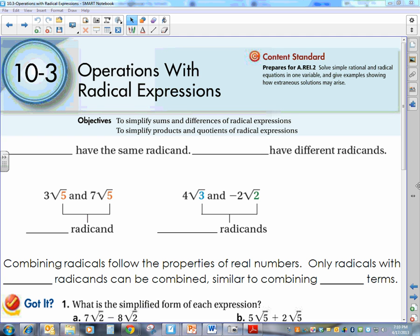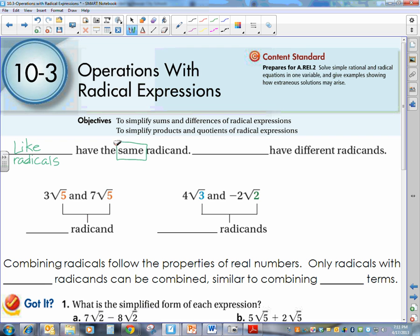Okay, today we're talking about operations with radical expressions. We need to make sure you know what we have. So the first thing we're going to talk about are like radicals. Like radicals have the same radicand. And if they're not like, then we call them unlike.